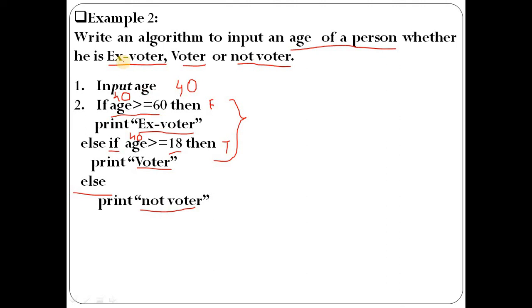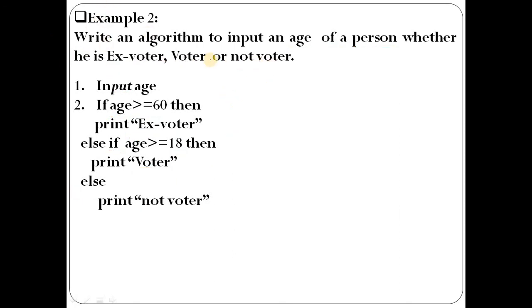We can understand how to use multiple conditions in an algorithm — ex-voter, voter, and non-voter. Each process can be used as an algorithm. Any type of number can be input as the age of a person and it can be evaluated through the program. That is the structure and the step-by-step process we follow when writing an algorithm.